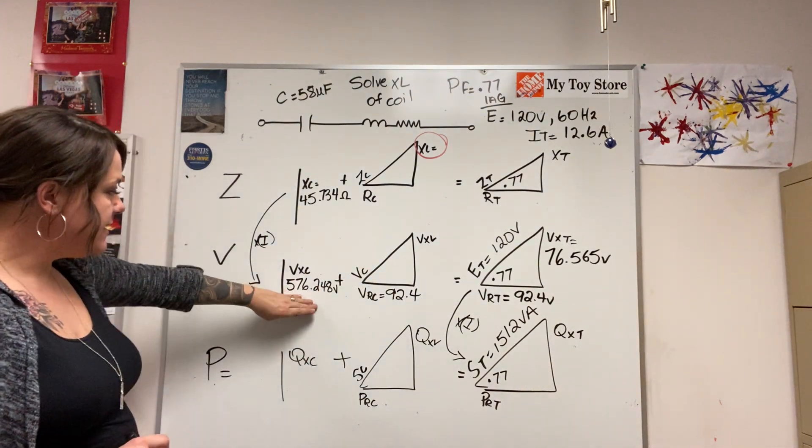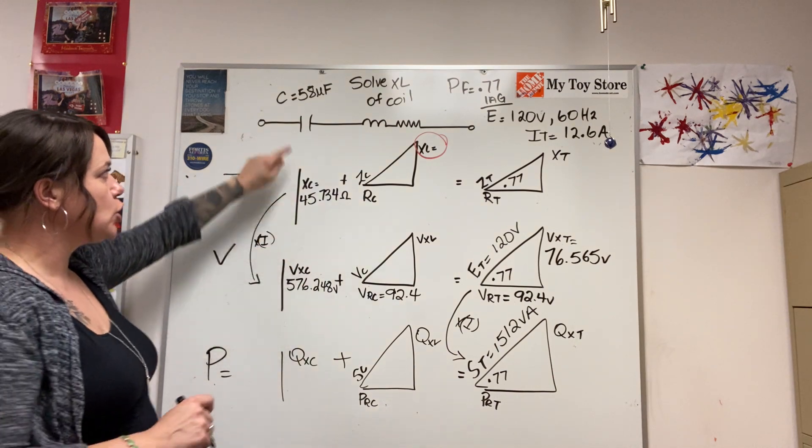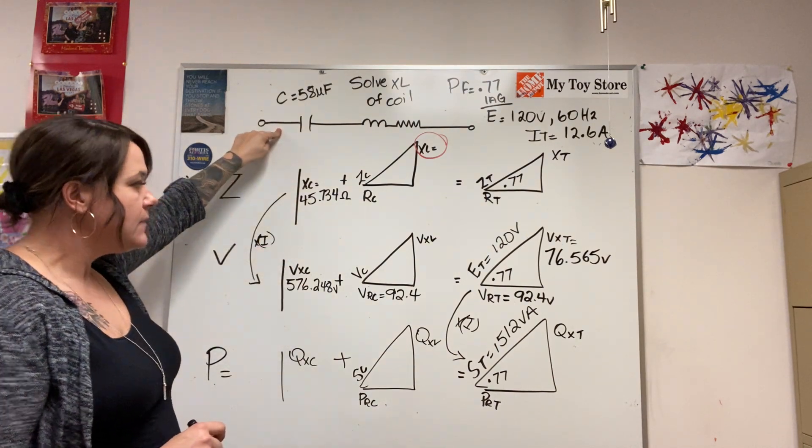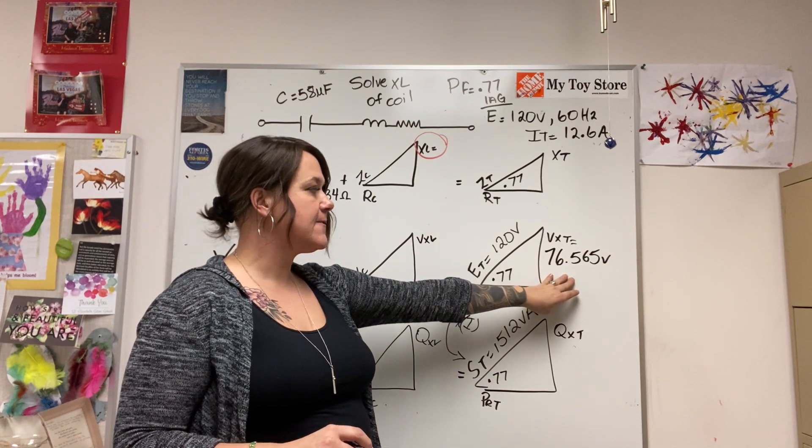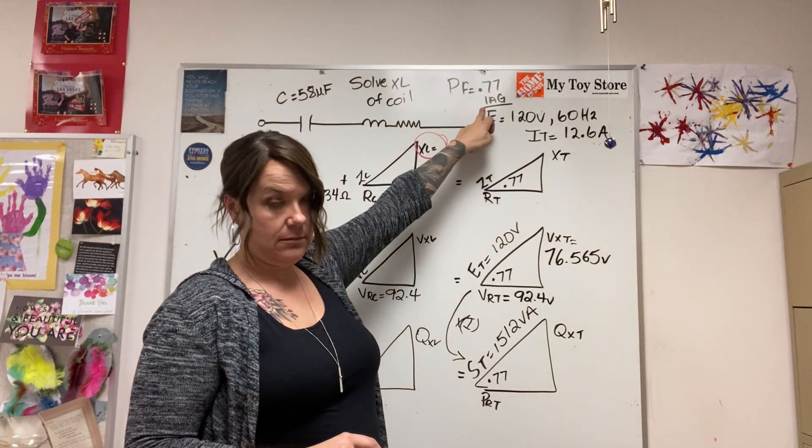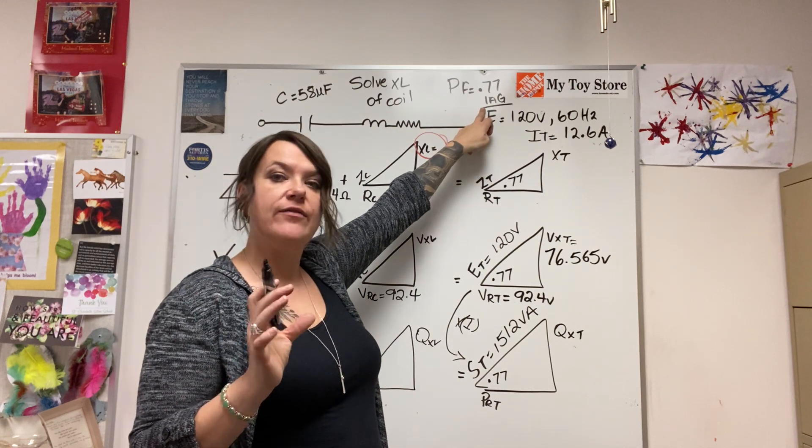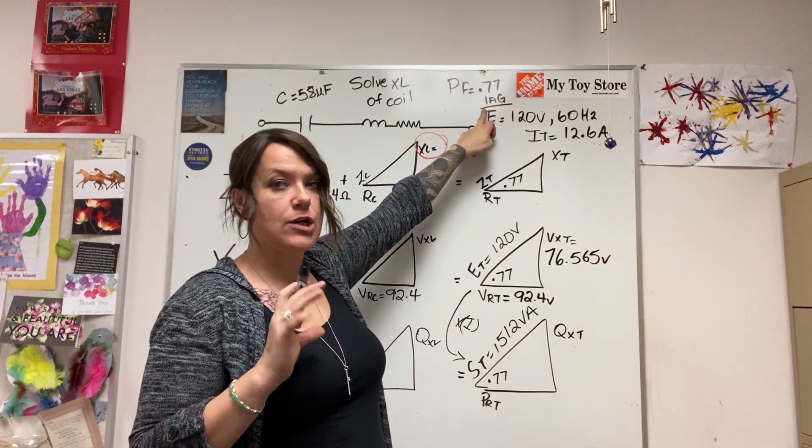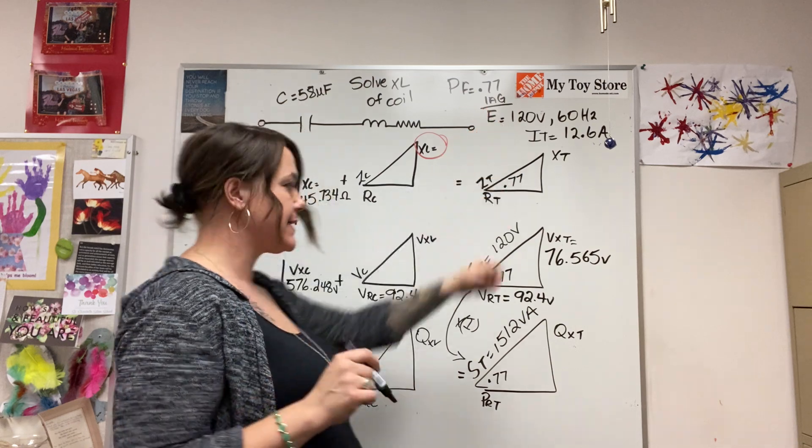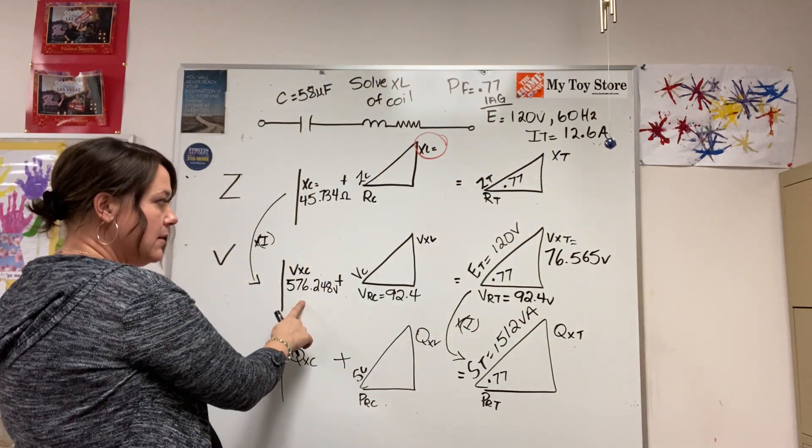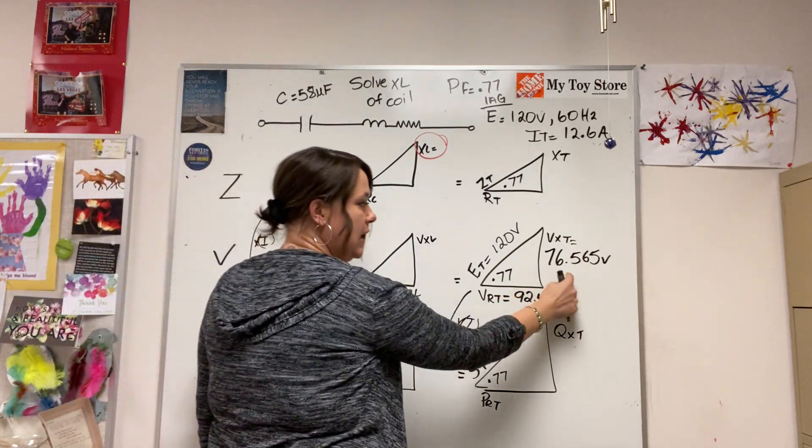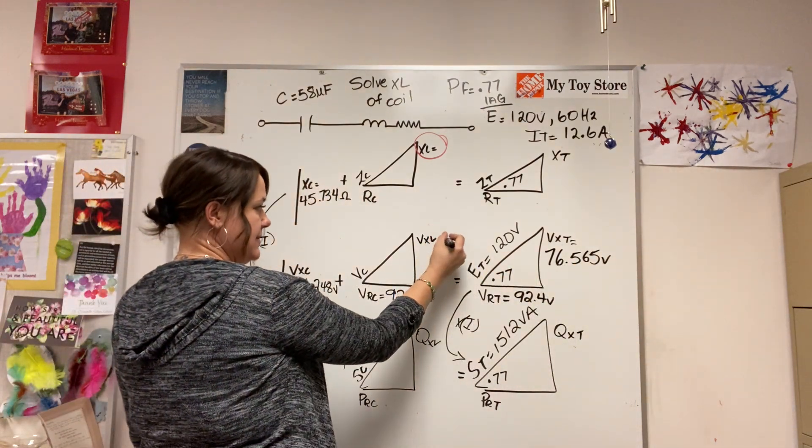Now I have 576.248 volt drop across the capacitor. I have a VXT of 76.565 lagging. Remember in the beginning I said when you have an overall lagging power factor, that's an indicator that XL is larger than XC. So my XL has to be bigger than that. So this plus this will give me this.